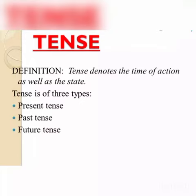Tense denotes the time of action as well as the state. Tense is of three types: present tense, past tense, and future tense.